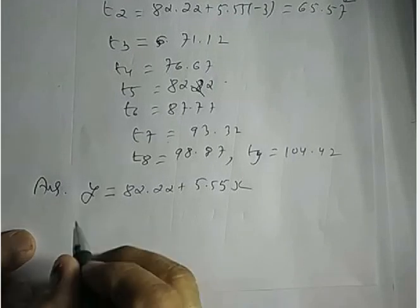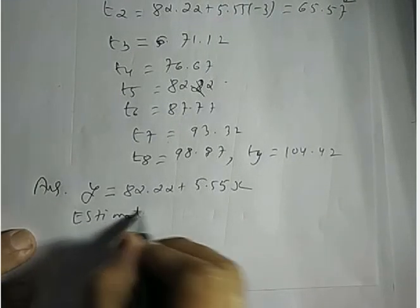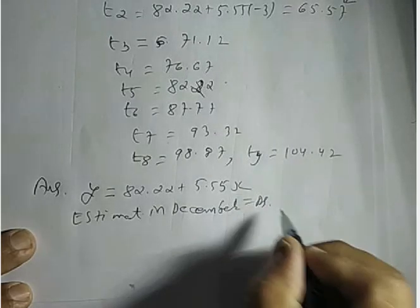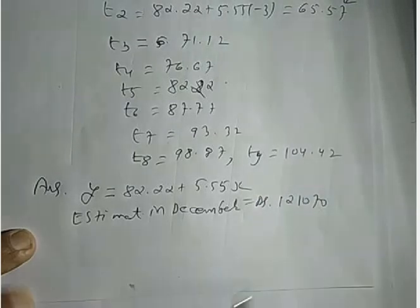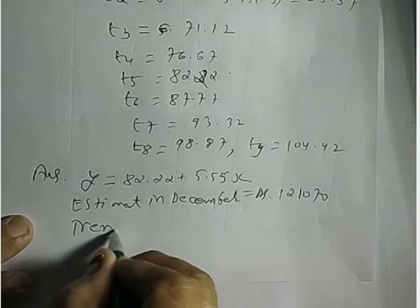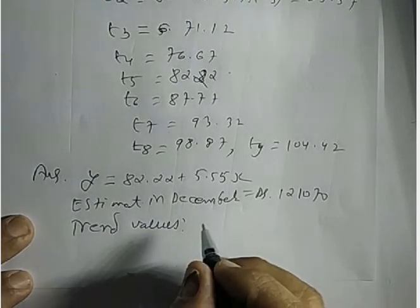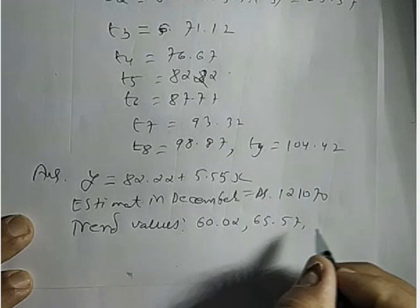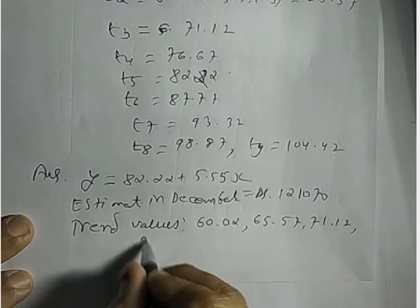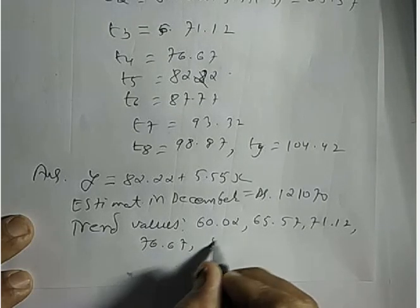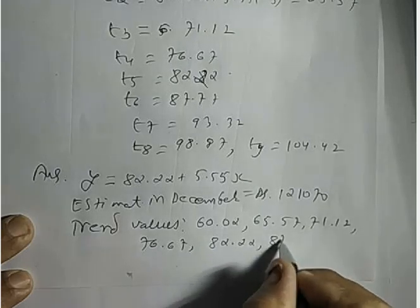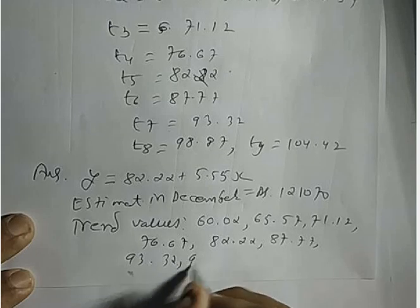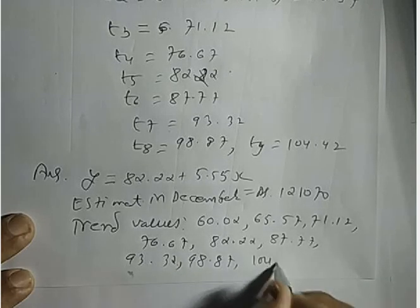Estimated profit for December equals 121.07 rupees. The trend values are: 60.02, 65.57, 71.12, 76.67, 82.22, 87.77, 93.32, 98.87, 104.42.